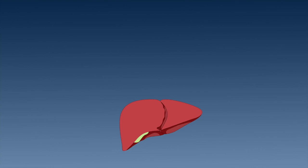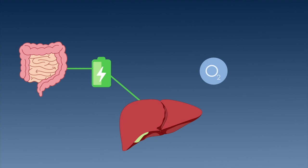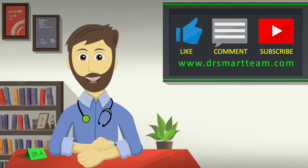For all this work, this big factory itself needs energy and oxygen. It gets energy from the blood coming from the gut and gets fresh oxygen from the blood coming from the heart. A healthy liver is essential for a healthy life.